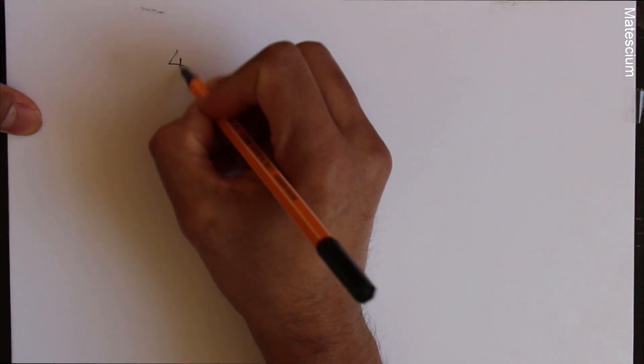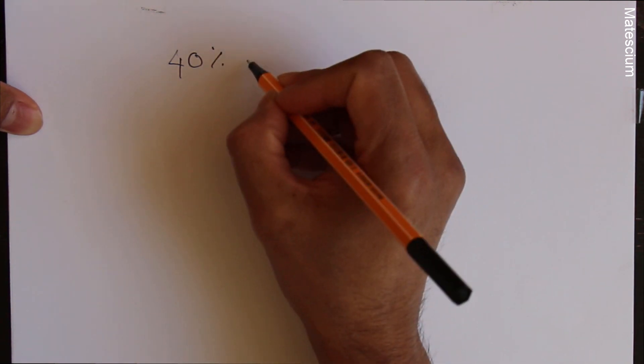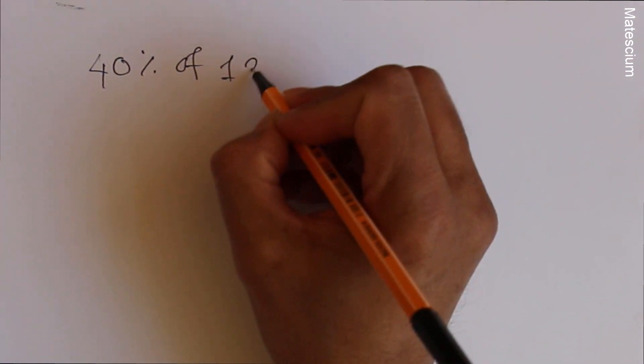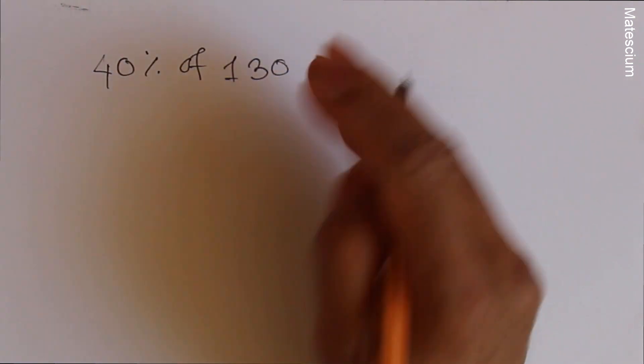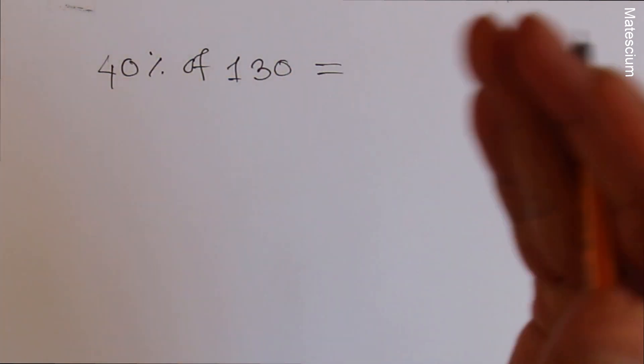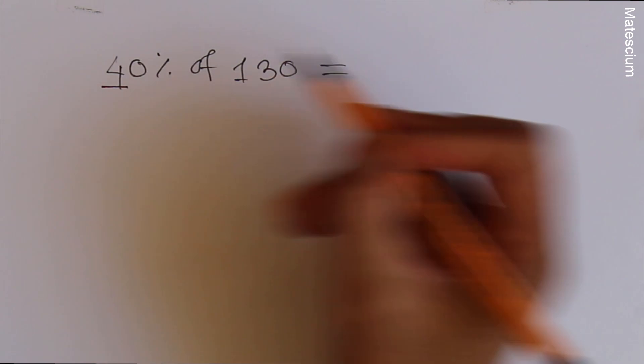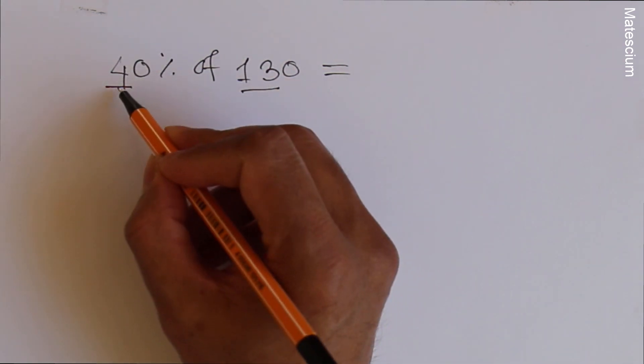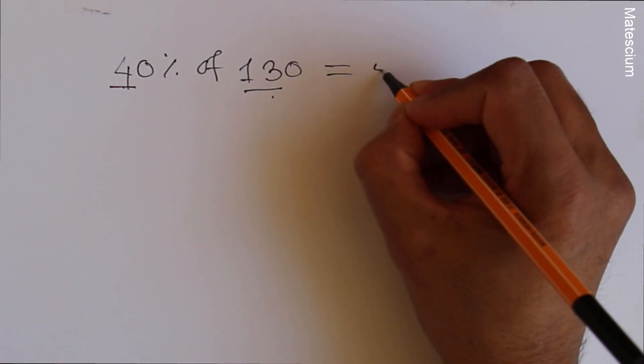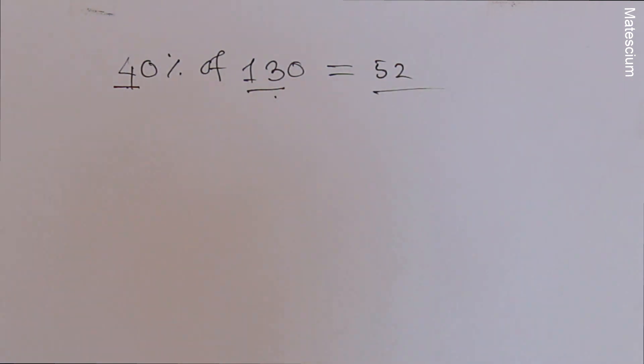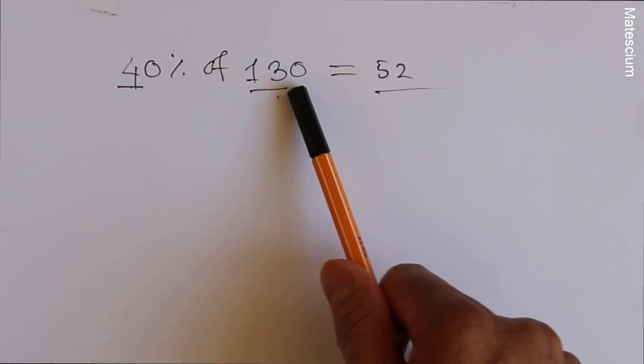Let's say 40% of 130. You don't need any calculator to calculate this percentage. So what you have to do, you have to multiply this 4 with 13. That means 4 times 13 which is 52. Yes, this is the answer. That means 40% of 130 is 52.